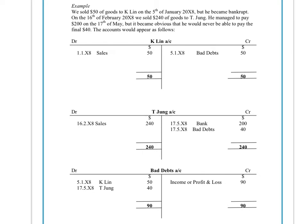So how do we go about doing the double entry for bad debts? If we look at the example here, we sold goods of $50 to Kaylin and he became bankrupt, so we know we're not going to get that money back. On the 16th of February, we sold $240 to Jae-yung. He managed to pay $200 of that debt, but it became obvious that he wouldn't pay the final $40. The double entries would be as follows.